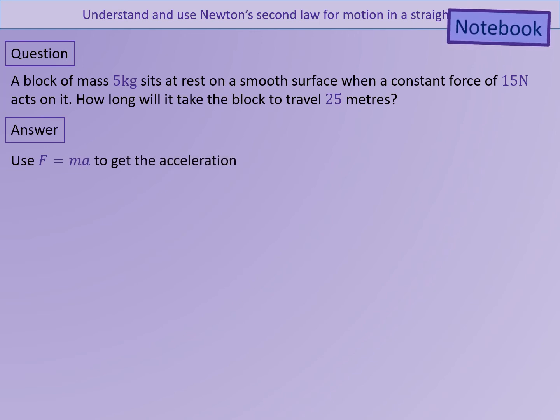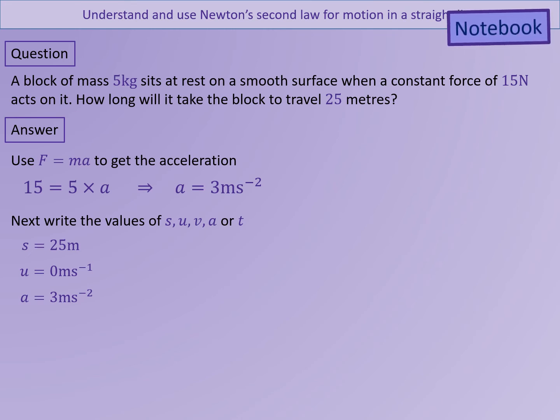So first of all, using F equals MA, we get 15 equals five times A. So the acceleration of the object is three meters per second squared. We can now write down the other values that we know. We know that the distance traveled is 25 meters. The initial velocity is zero because it was initially sitting at rest. And the acceleration we have just calculated as three.